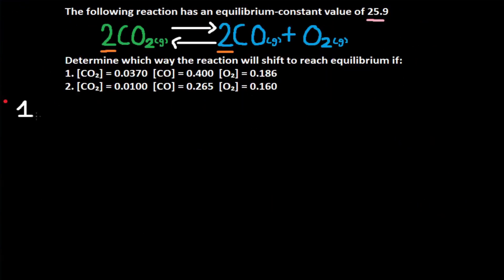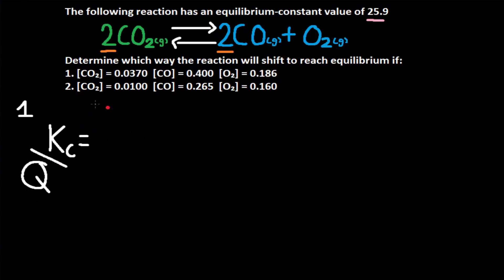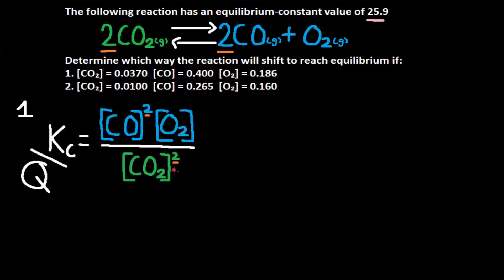Let's tackle this next practice problem. It's asking us to determine which way the reaction will shift to reach equilibrium if we have these concentrations. This is a reaction quotient question because it's telling us these concentrations are not at equilibrium. A reaction quotient is basically the same as Kc, but Kc is specifically products and reactants at equilibrium. We're going to get the Q value and compare it to the Kc value they give us. Kc equals products divided by reactants: CO squared times O2 divided by CO2 squared.